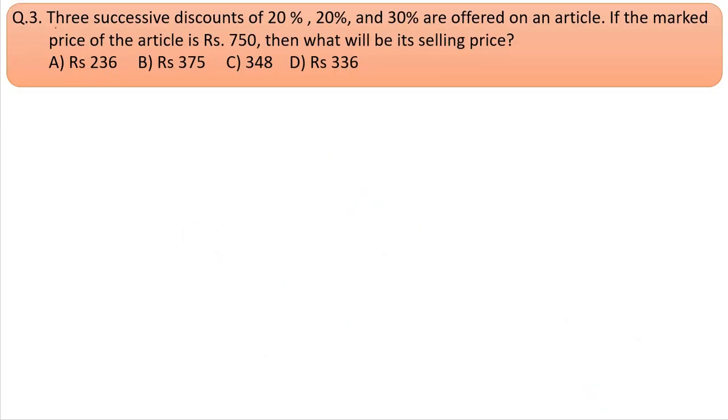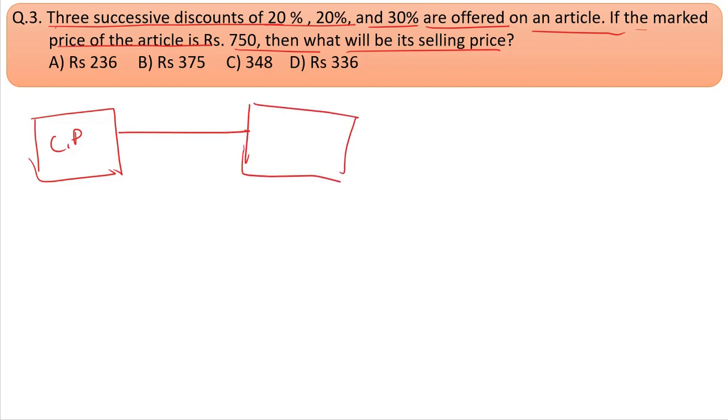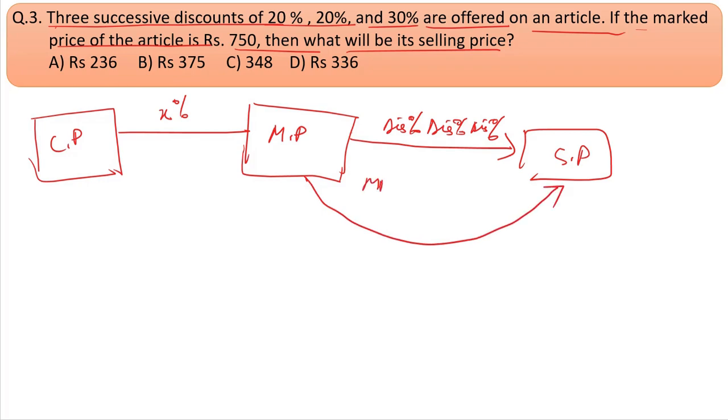Question three: Three successive discounts of 20%, 20%, and 30% are offered on an article. If the marked price of the article is Rs. 750, then what will be the selling price? We have cost price, then marked price or MRP. After discounts are applied, we get the selling price. Mark price equals selling price after applying discount percentages.